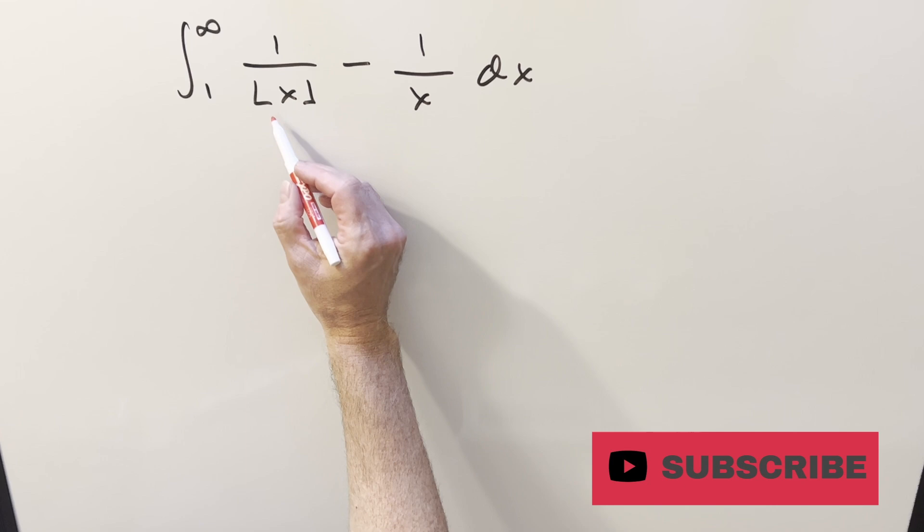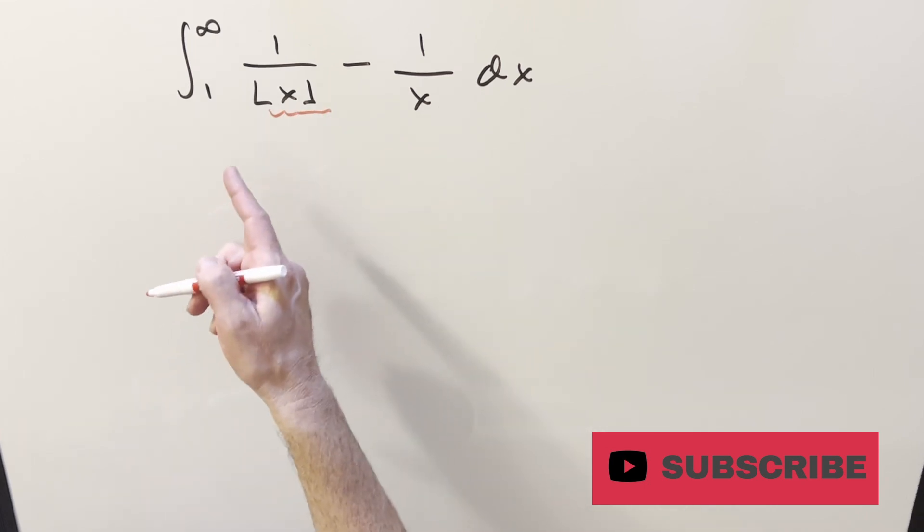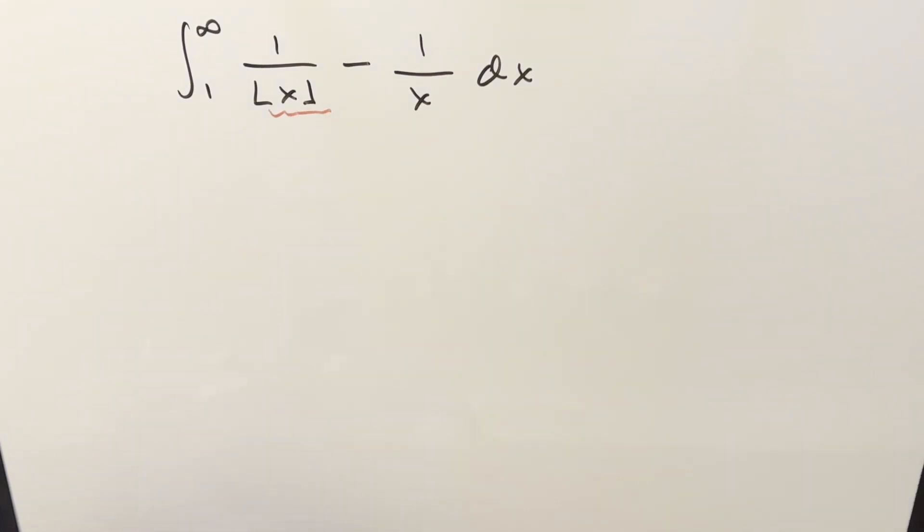Now, because we have the floor function in it, what I'm going to want to do is break this up. If I can break the bounds up on integer values, it's going to allow us to simplify this first part to just a constant.